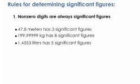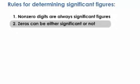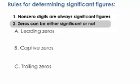The trickiest part about determining significant digits is with zeros, because they may or may not be significant. There are three types of zeros: leading, captive, and trailing.